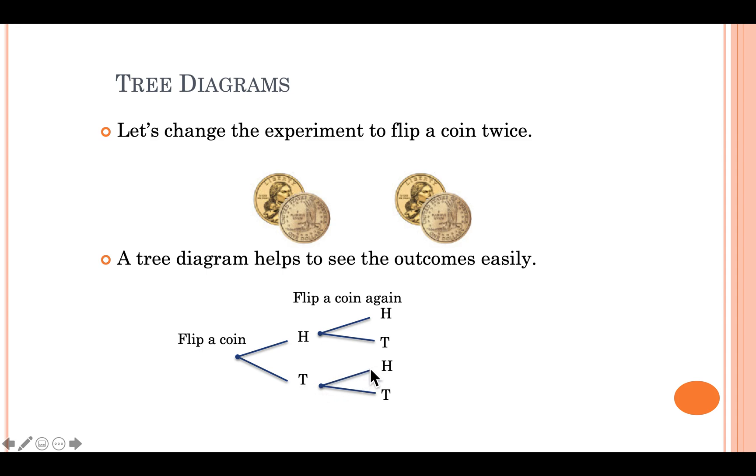Tails, heads, and then one more time, tails, tails. So we're making sure that we hit all four outcomes, and then when we are done, we're going to label them here. So our outcomes: heads, heads, heads, tails, tails, heads, tails, tails.